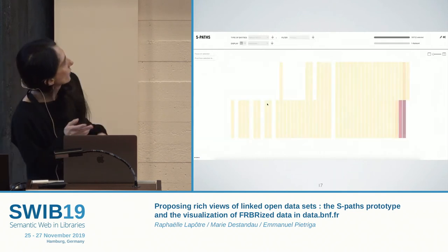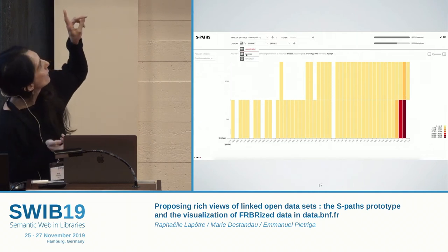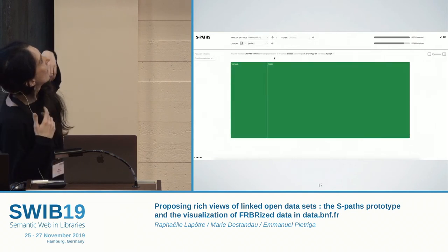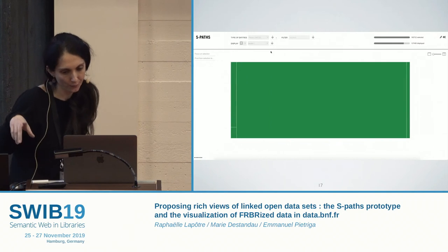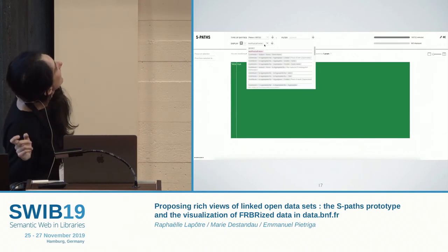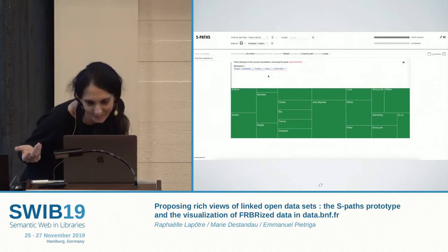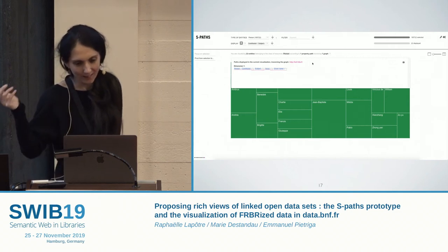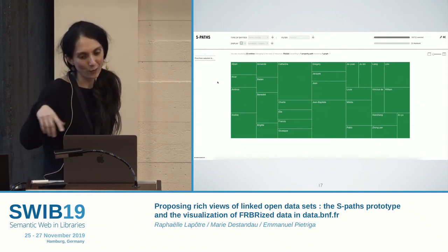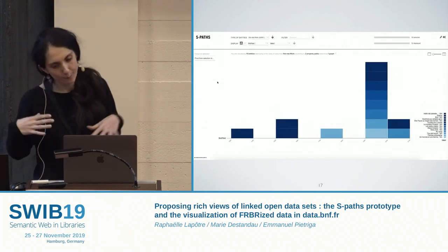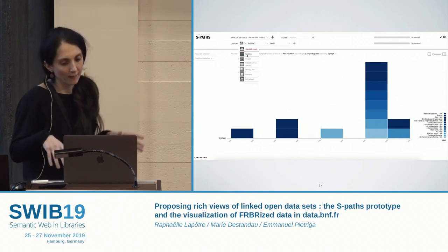The user comes back to the previous screen and switches to the tree map view that is also available. The overview is now about the genre of the author — female and male — showing the proportion. Then another view is tried, where the property displayed relates to France: place of death by country, with only 600 entities represented. The next view shows the subject of the entity to which the author contributed. From there, the user can pivot to works — instead of looking at persons, now looking at works — keeping previous selection constraints.